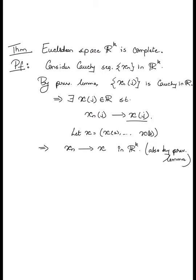Now let x be composed of all the components of these limits: x_1 all the way up to x_k. Every component of the sequence converges, so again by the first statement of the previous lemma, x_n in fact converges to x in R^k. The previous lemma lets us piggyback on the completeness of R to prove the completeness of R^k. We go from Cauchy sequences in R^k to component Cauchy sequences in R; completeness of R gives limits for those, and composing those limits gives the limit in R^k. This shows that the Euclidean space R^k is complete.